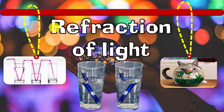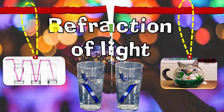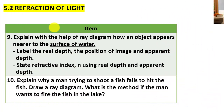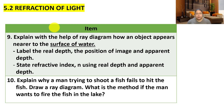Hi students, today I will continue with 5.2 - refraction of light. This is about another formula to find the refractive index. From this 5.2 video clip, I will explain with the help of a ray diagram how an object appears nearer to the surface of the water. We need to label the real depth, the position of the image, and the apparent depth.